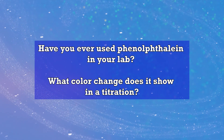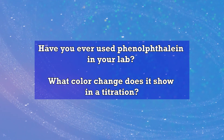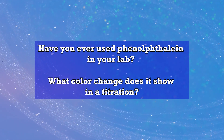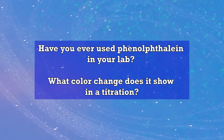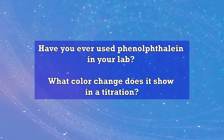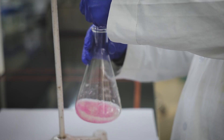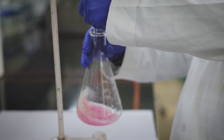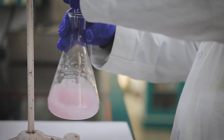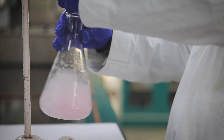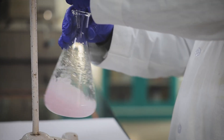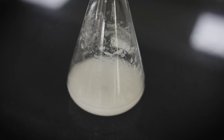Many reagents and chemicals are used in this test. Have you ever heard phenolphthalein being used in your school lab? What color change does it show in a titration? Phenolphthalein shows a pink color in basic solutions, and the color disappears when the solution becomes acidic.